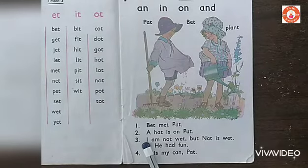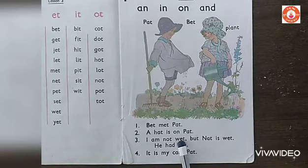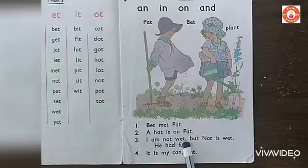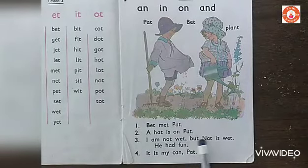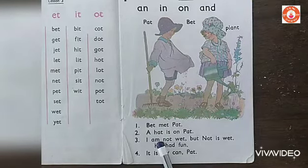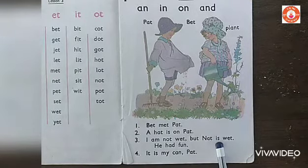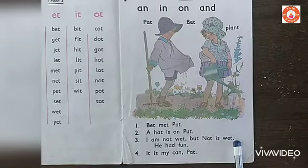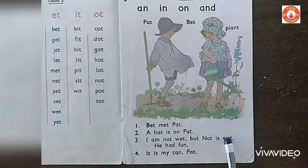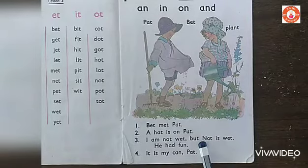Number 3. I am not wet. N-A-T — Nat. V-A-T — comma. That means the sentence is not over yet; there are still more words. I am not wet. But N-A-T — Nat — is wet. Full stop. Here the sentence gets over. But Nat is wet. Why is there a capital letter in the middle of the sentence? Because Nat is a name.